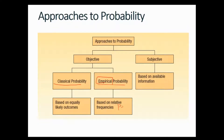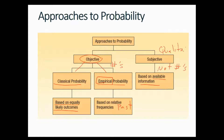Empirical probability uses information from the past, like data from surveys or past experience. Classical probability approach is based on equally likely outcomes. The subjective approach is based on available information and is not based on numbers or calculations. Think of subjective as a qualitative approach versus the quantitative objective approach, where classical and empirical both involve calculations.